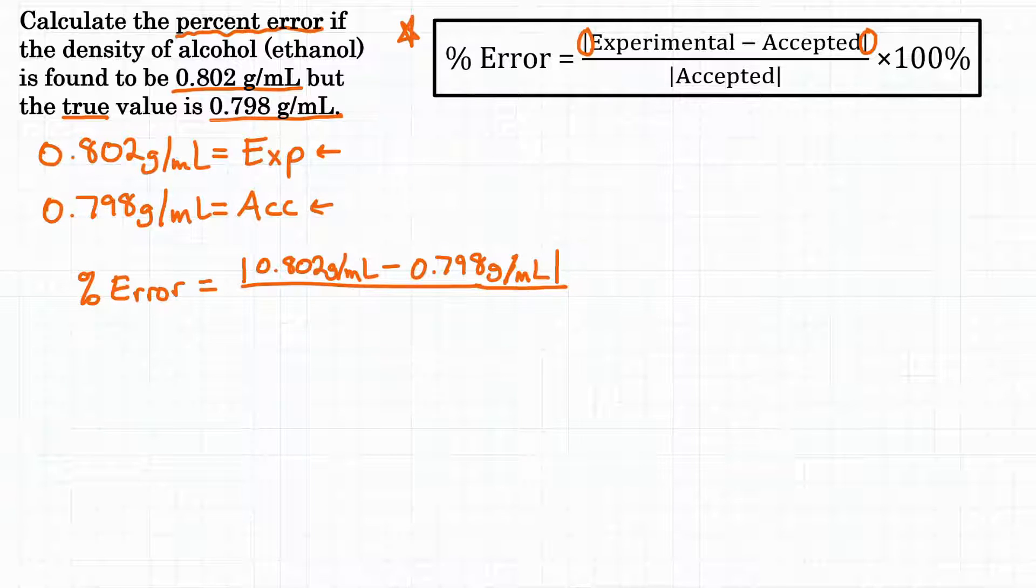So that's what is on top of our fraction and then on bottom is just the accepted value but also again in absolute value bars because we need the positive. So on the bottom absolute value 0.798 grams per milliliter close absolute value and then all of that times 100 and add the percent sign to make this a percentage.